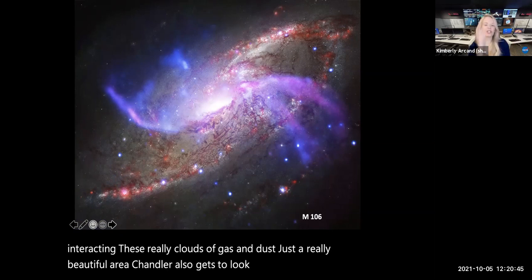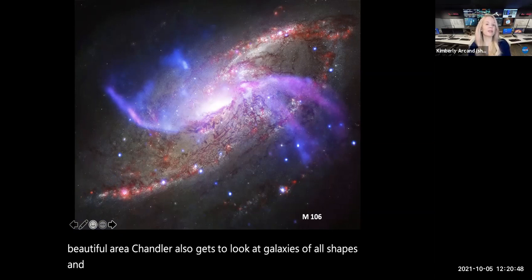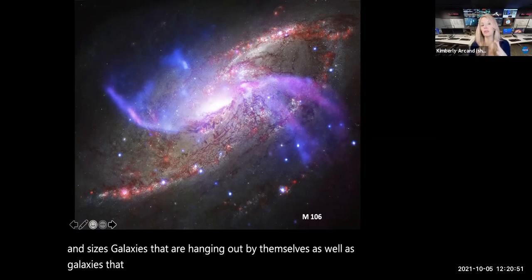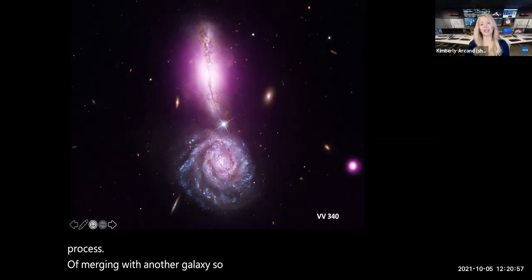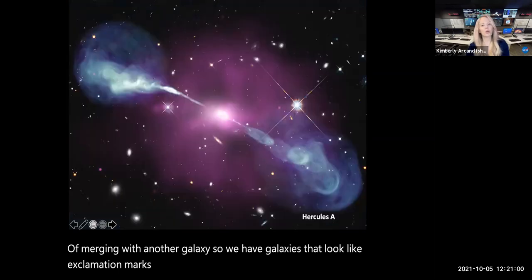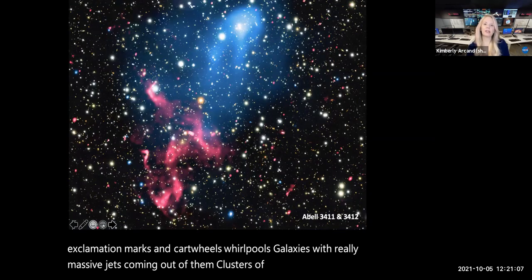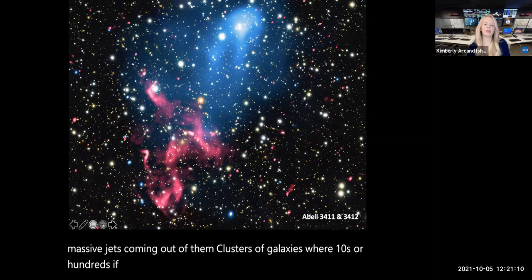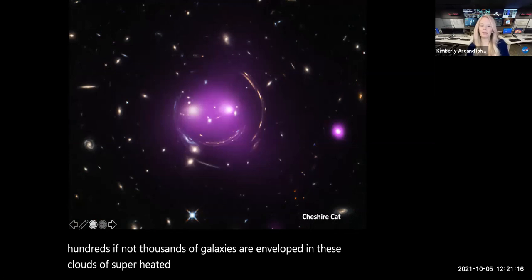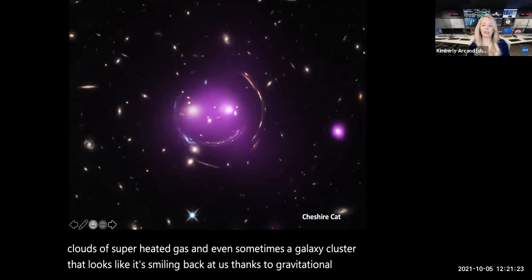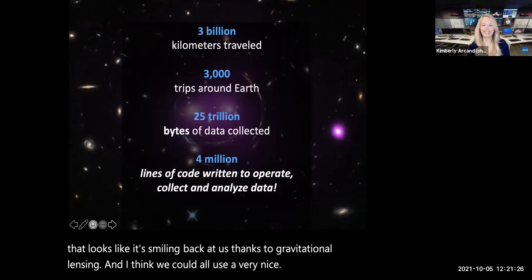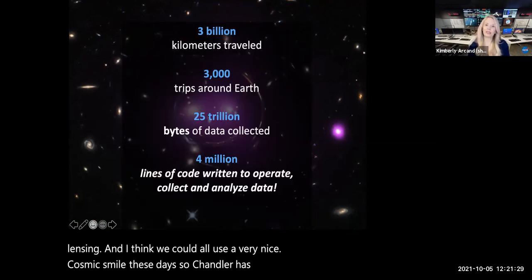Where all sorts of exciting things are happening, where there's lots of stars and pairs and neutron stars and things interacting, these really clouds of gas and dust, just a really beautiful area. Chandra also gets to look at galaxies of all shapes and sizes, galaxies that are hanging out by themselves, as well as galaxies that are interacting with others nearby, or perhaps in the process of merging with another galaxy. So we have galaxies that look like exclamation marks and cartwheels, whirlpools, galaxies with really massive jets coming out of them, clusters of galaxies where tens or hundreds if not thousands of galaxies are enveloped in these clouds of superheated gas. And even sometimes a galaxy cluster that looks like it's smiling back at us thanks to gravitational lensing. And I think we could all use a very nice cosmic smile these days.